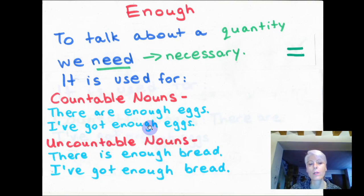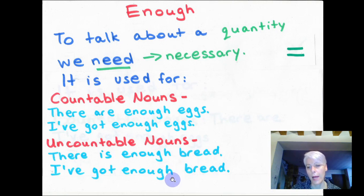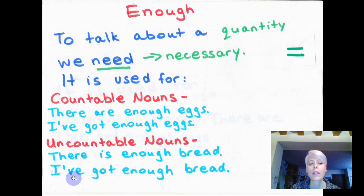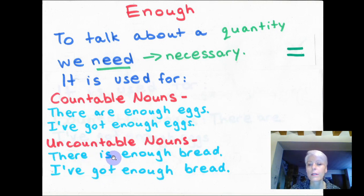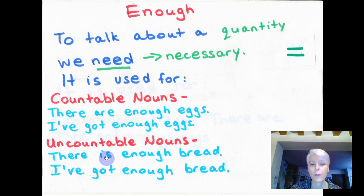Uncountable nouns use 'enough' the same way. There is enough bread. I've got enough bread. If I use he, she, or it: she's got enough bread. With 'there is', the verb is 'is', because uncountable nouns only take the singular form of the verb.